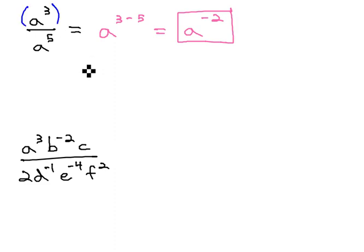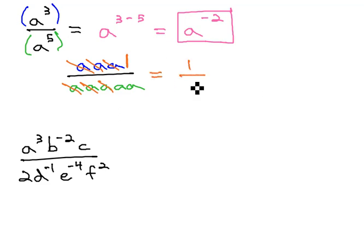a cubed means we have 3 a's multiplied together over a to the fifth, which means we have 5 a's multiplied together. When we reduce, a's divide out in the numerator and denominator, and all the a's in the numerator are gone, which means we technically have a 1 left over in the numerator. We have 1 over a times a, or a squared.